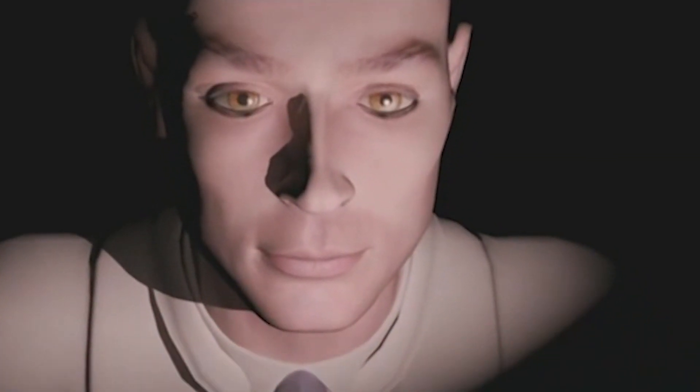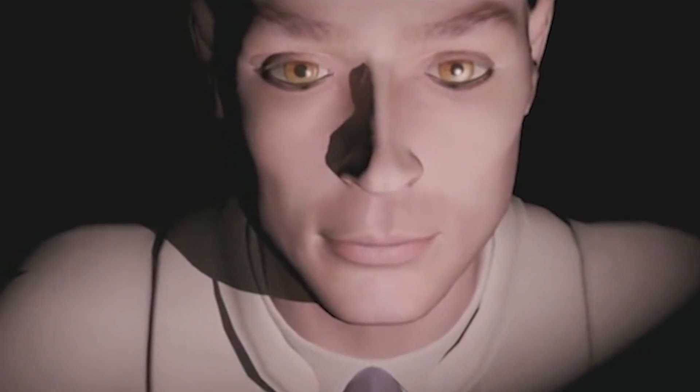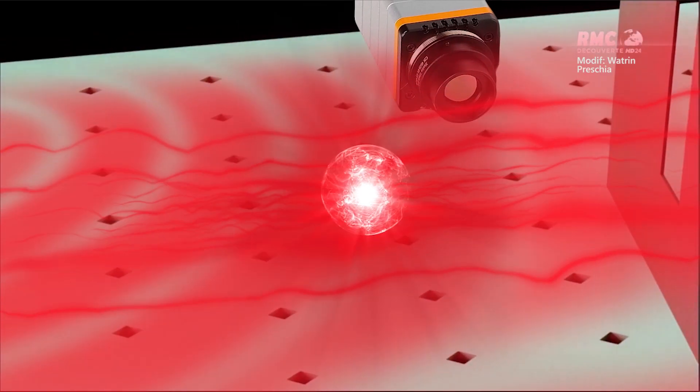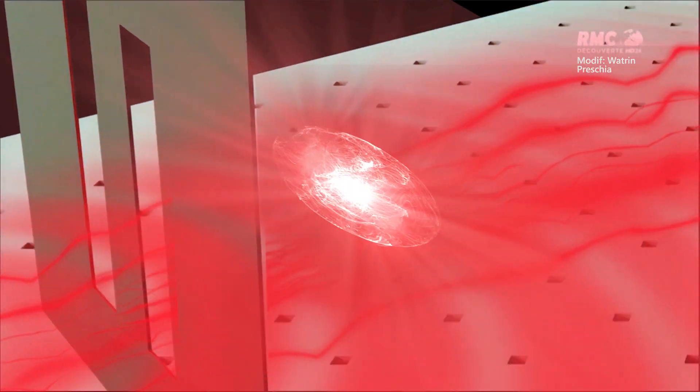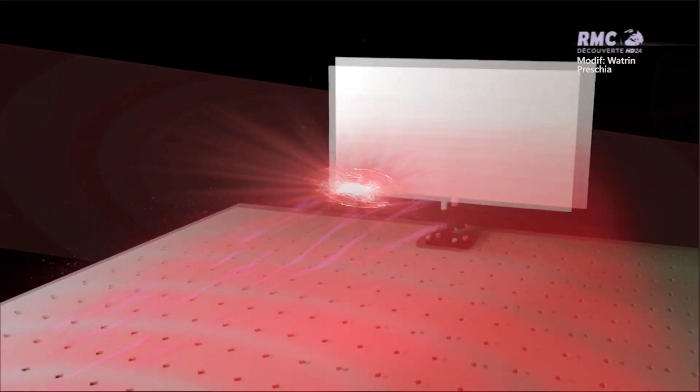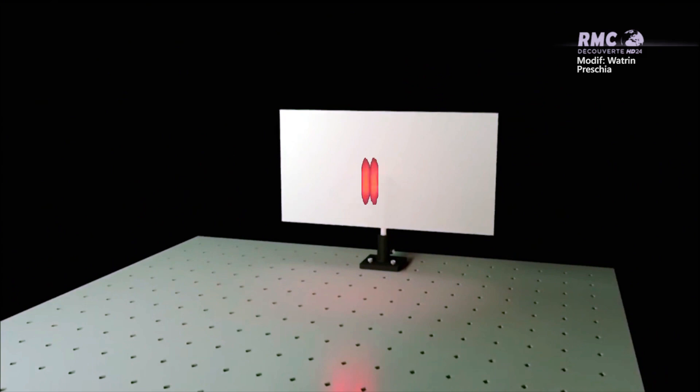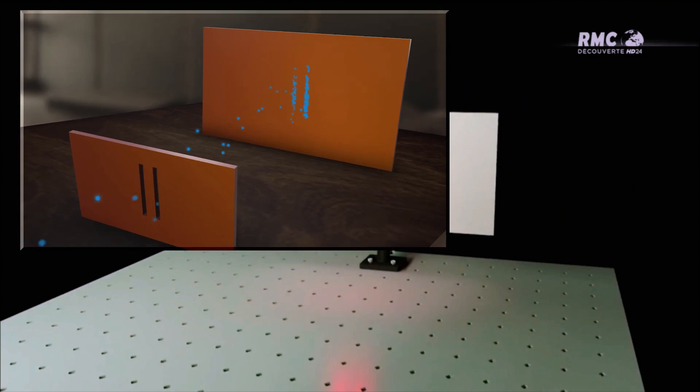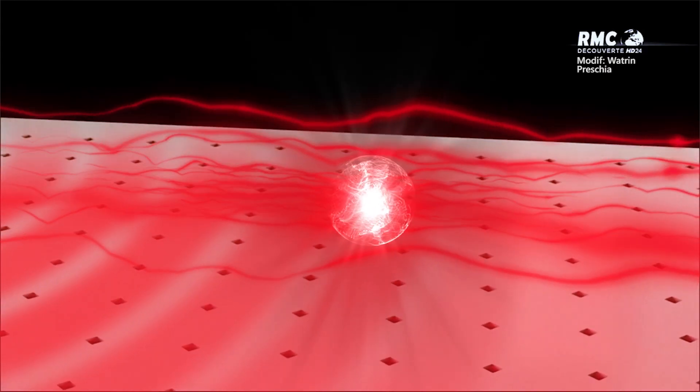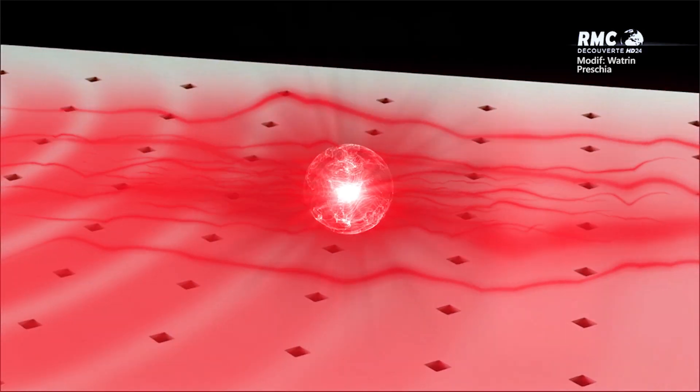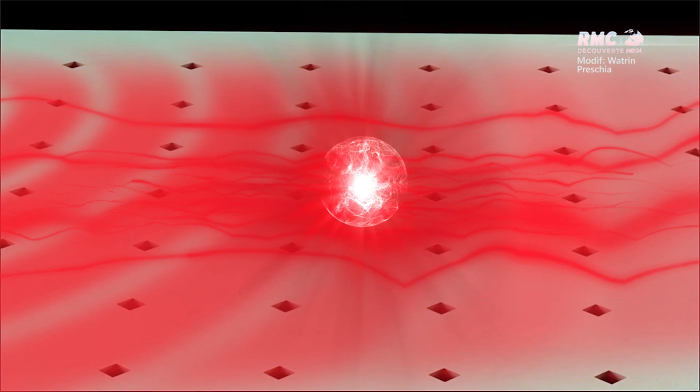But even more extraordinary, when they observed this phenomenon using an appropriate device to study through which slit the photons passed, the impact marks on the screen were no longer interference fringes, but two parallel lines as in the case of microbeads. It was therefore obvious that these quantum objects transformed from wave to particle as if they were aware of the observation to which they were being subjected.